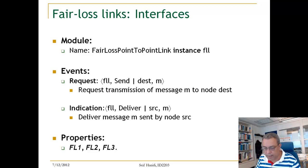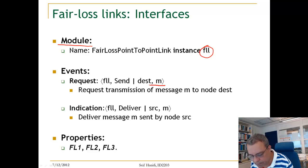So here is the module specification of a Fair Loss Link. It's a Fair Loss Link with an instance called FLL. It has two events, the request event and the indication event, as we described before. Here is the request event. It's a send with a destination and a message, which requests transmission of a message M to the node destination.